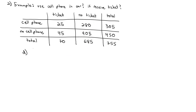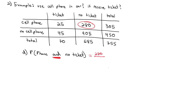Next, let's look at the AND probability. What's the probability that a random person used their phone and received no tickets? The AND wants to know where both conditions overlap — that's the 280 people who are in both the no ticket column and the cell phone row. Dividing by 755, we get 280 divided by 755 equals 0.3709 as the probability that a randomly selected person used a cell phone in the car and did not get a ticket.